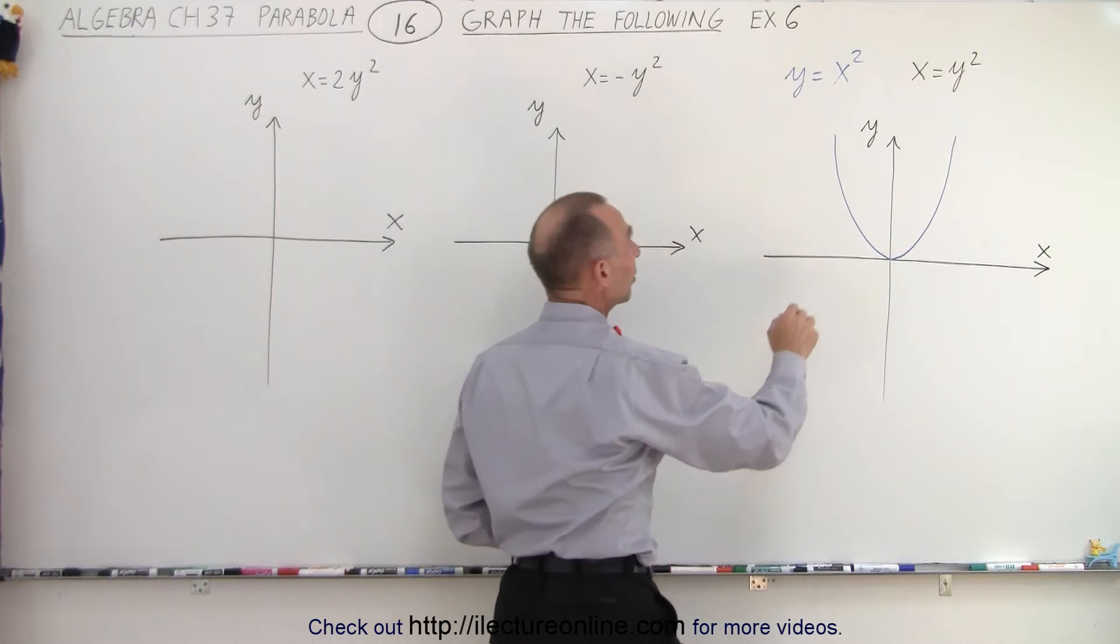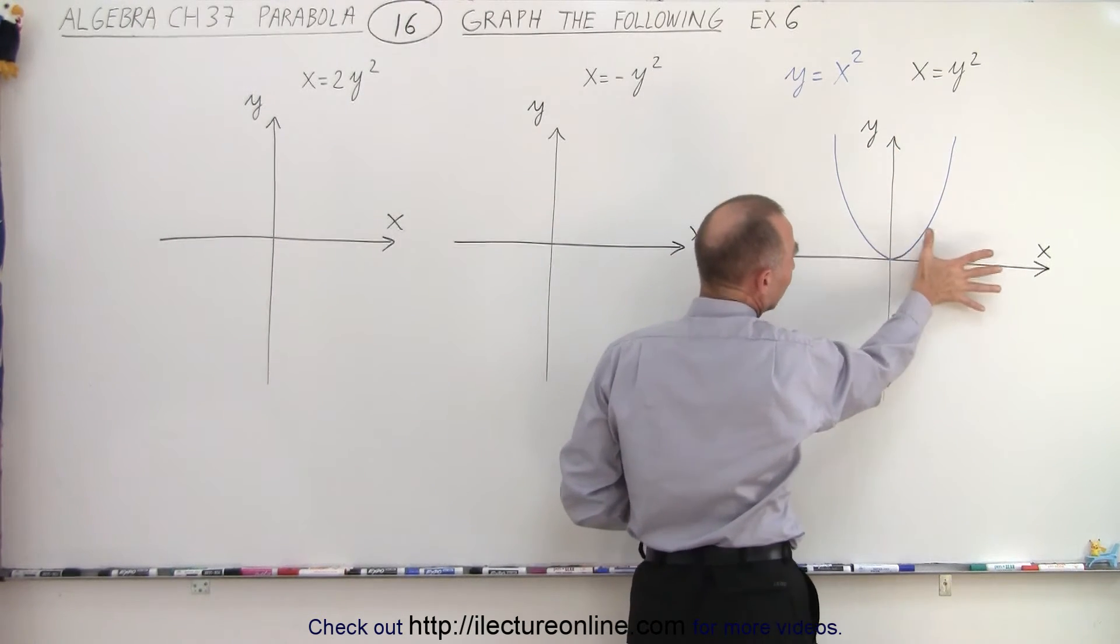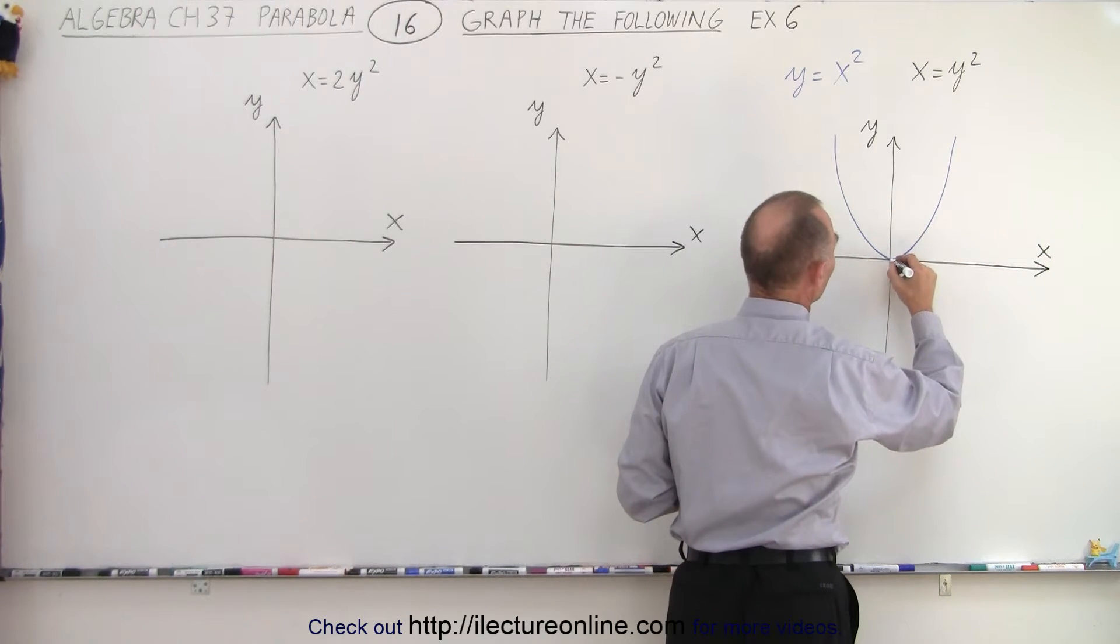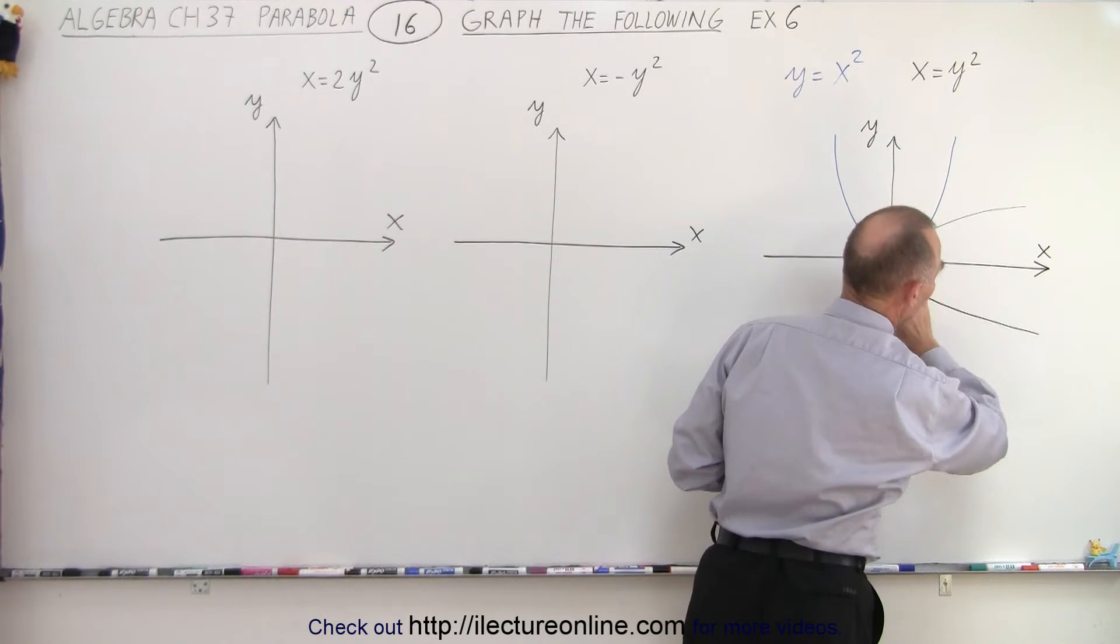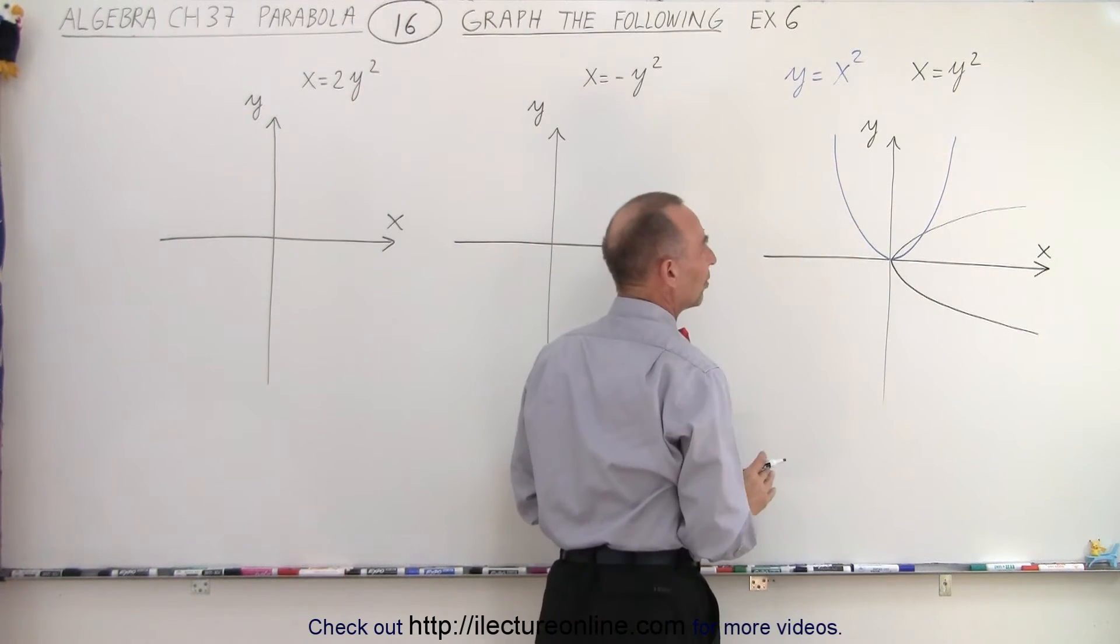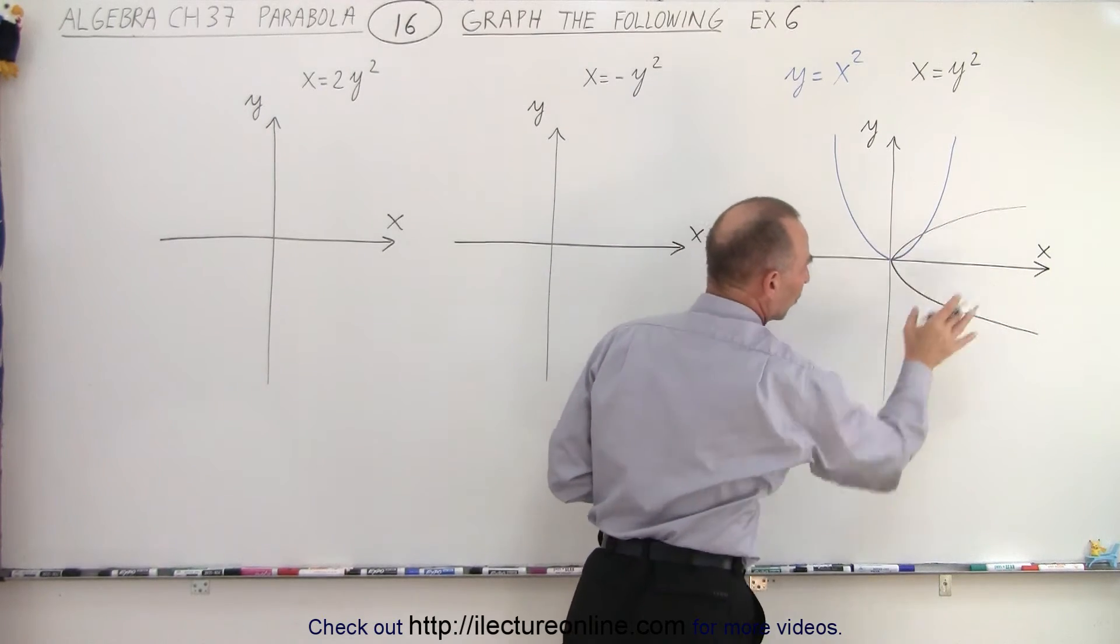But if we have something that looks like this, we're simply taking that and we're moving it into the x direction. So that means this graph will look like this. The parabola will open towards the positive x-axis and it looks exactly the same except it simply shifted towards the x-direction.